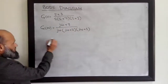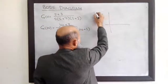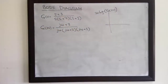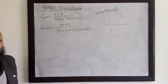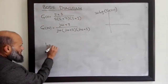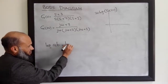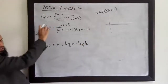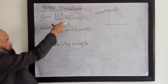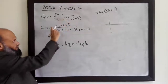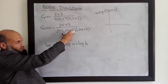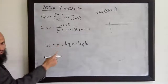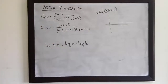One advantage of plotting the magnitude in dB is that here the terms are being multiplied. If we work in dBs, their magnitudes will just be added, because we know that log of A multiplied by B is log of A plus log of B. So the magnitude plot of this overall transfer function will be equal to the magnitude of each individual factor added together. We sketch the magnitude plots for individual factors and just add them to get the overall magnitude plot.